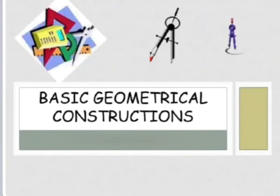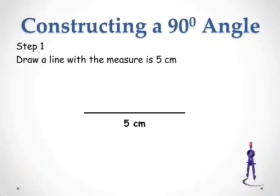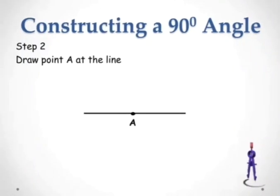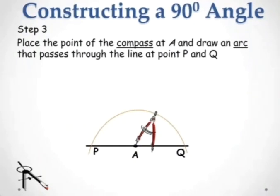Now we take the next topic: basic geometrical construction. Here we are constructing a 90 degree angle. Step 1: draw a line with a measure of 5 centimeters — we can take any length. Step 2: draw a point A at the line. Step 3: place the point of the compass at A and draw an arc that passes through the line at points P and Q.